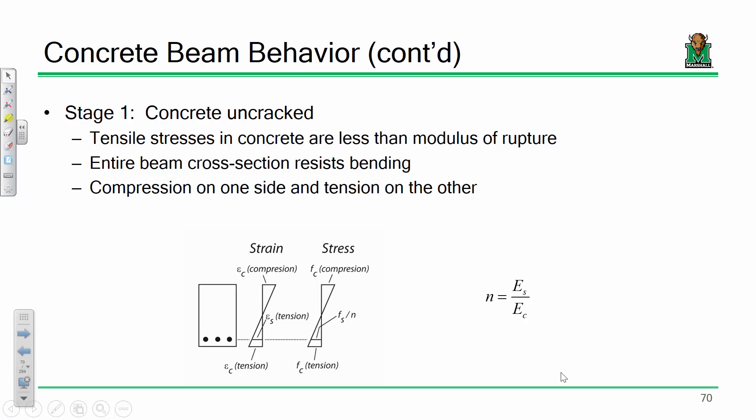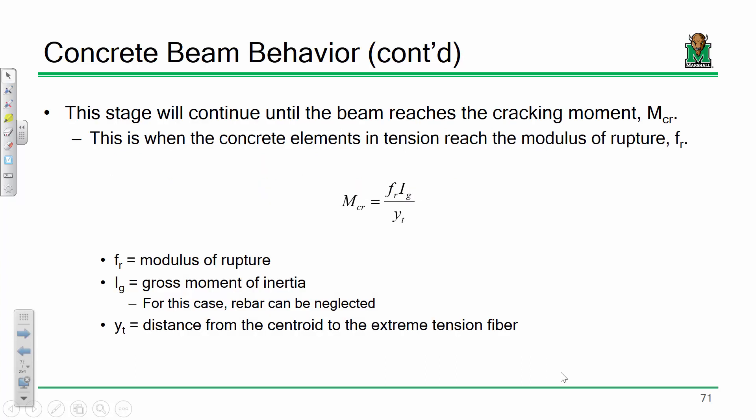Another way of looking at it: the bending moment is less than the cracking moment. When that is the case, the beam behaves exactly as it would in Engineering 216 — sigma equals MY over I. That's fine until you reach the cracking moment. The cracking moment is sigma equals MY over I, setting sigma equal to the modulus of rupture and solving for M. So the cracking moment is FR times IG over YT, where IG is the gross moment of inertia and YT is the distance from the centroid to the extreme tension fiber.